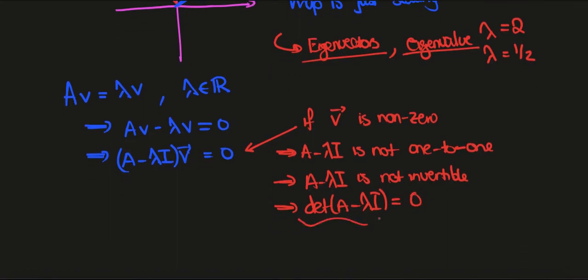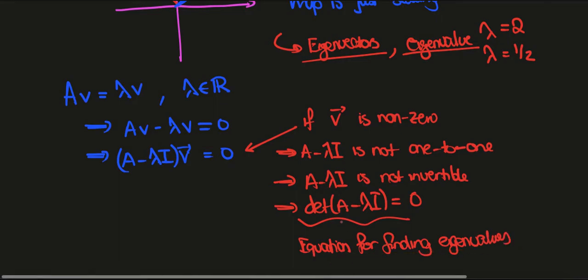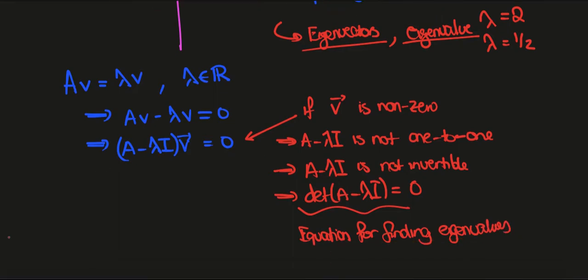So this is the equation for finding eigenvalues, which just relies on the fact that it sends a non-zero vector to 0, which means it's not one-to-one, it has a non-trivial kernel, and therefore the map is not invertible.